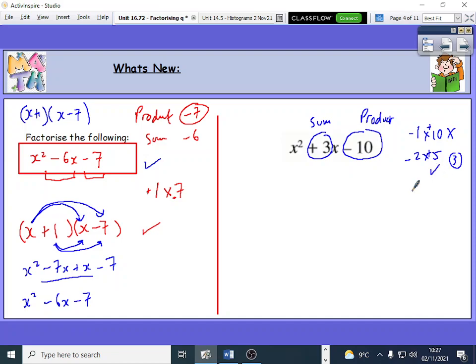These are the numbers. The numbers I'm looking for is minus 2 and a positive 5, because minus 2 times 5 is minus 10, and minus 2 plus 5 is a positive 3.